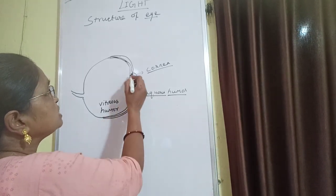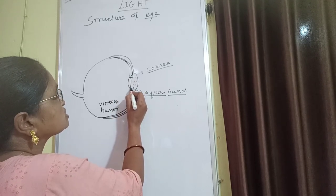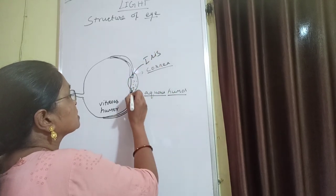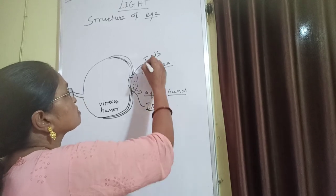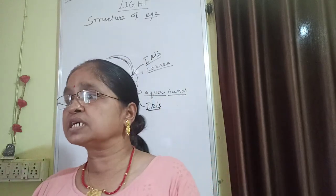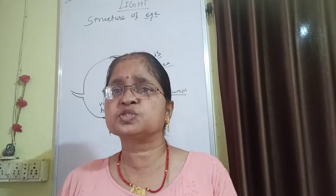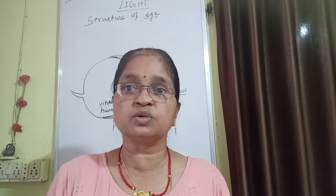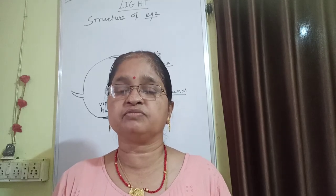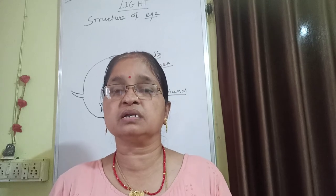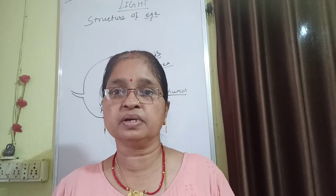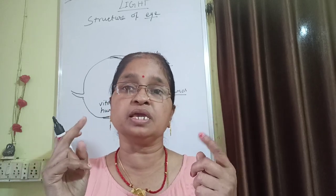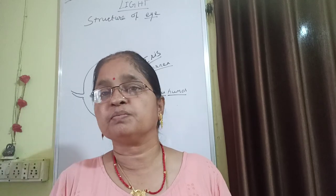Just beside this, you will see a disc-shaped structure made up of muscles, known as the iris. The iris is a disc-shaped structure which consists of colored pigment. Some people have black eyes, some have brown, some have dark bluish eyes. The iris consists of a dark color pigment, and that pigment gives color to the eyes — that is why we see black or brown color.